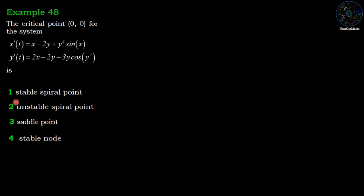The options are: (a) stable spiral point, (b) unstable spiral point, (c) saddle point, and (d) center. These are the possible properties of a critical point.